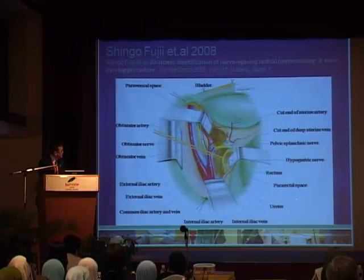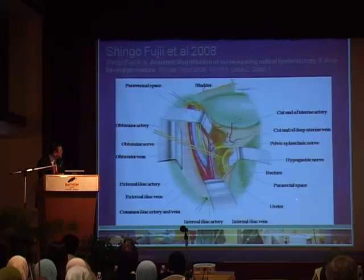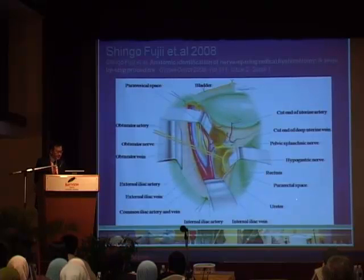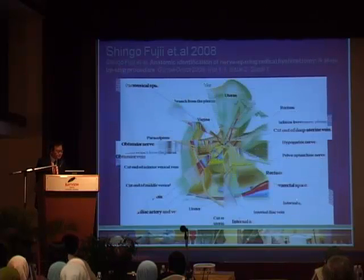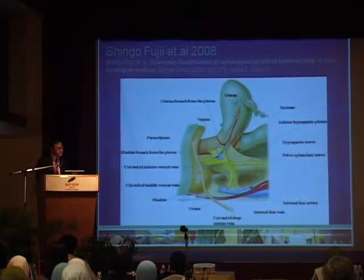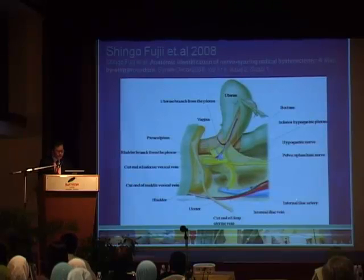Sakuragi, in the Okabayashi space, after dissecting the ureter out, reached right down to a space just lateral to the uterosacral ligament, where the hypogastric nerve comes through, which carries the sympathetic fibers to the organs like the bladder and the rectum. The last important structure is the inferior hypogastric plexus, supplying branches to the bladder, to the uterus, and to the bowels as well.